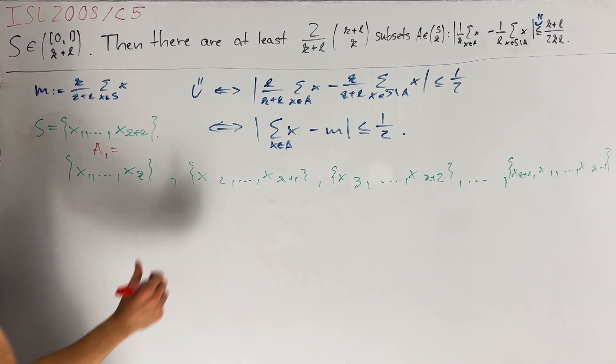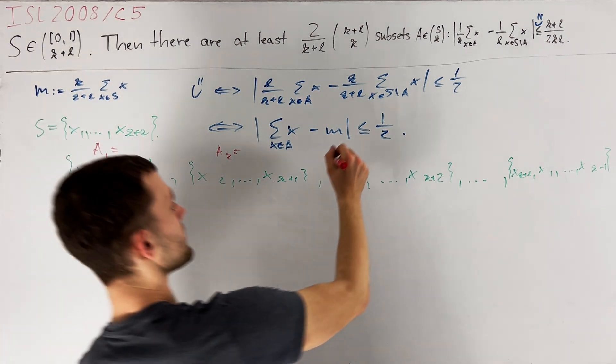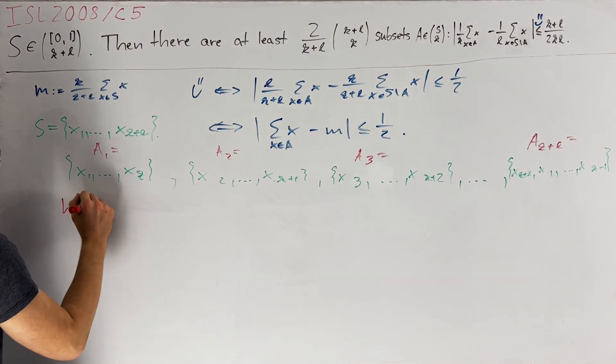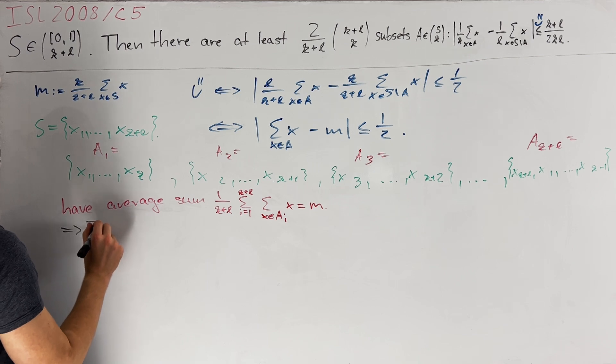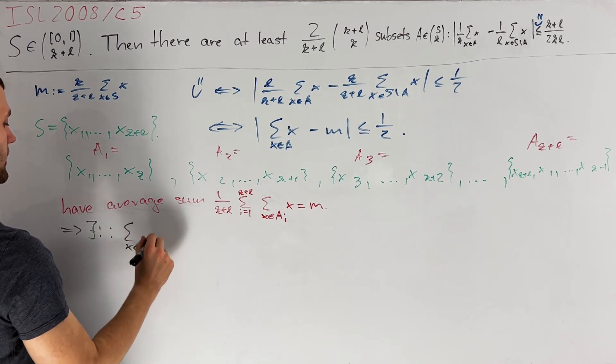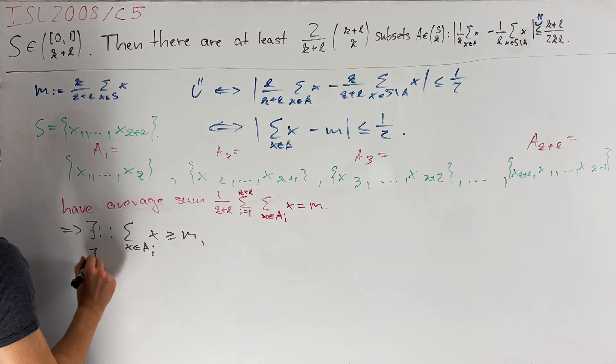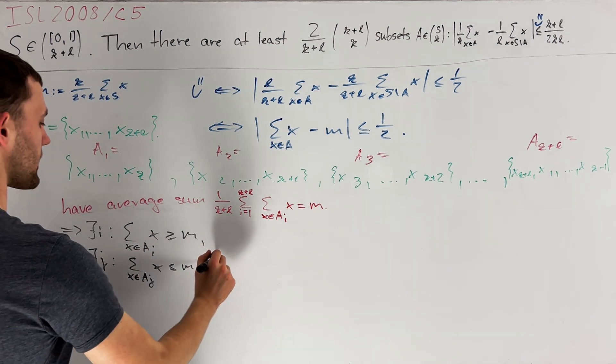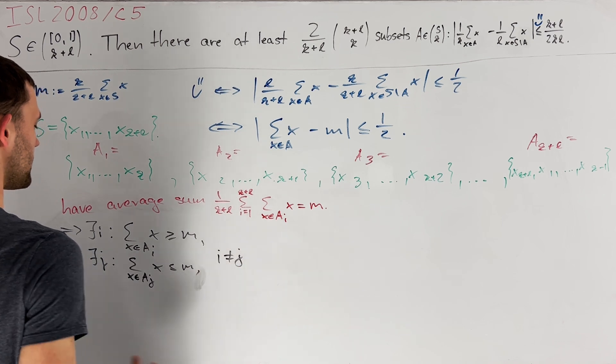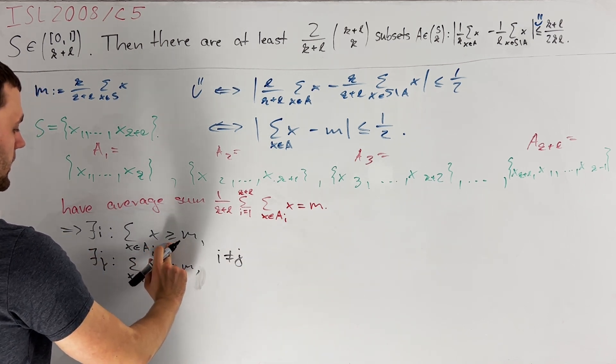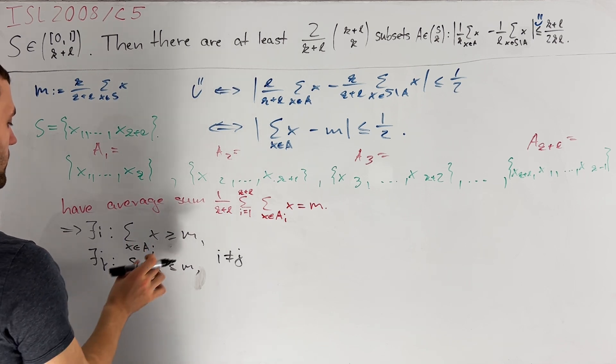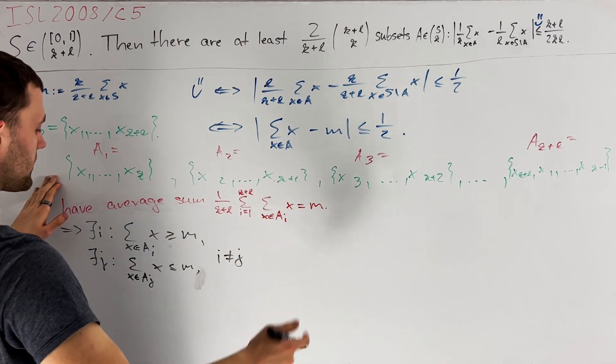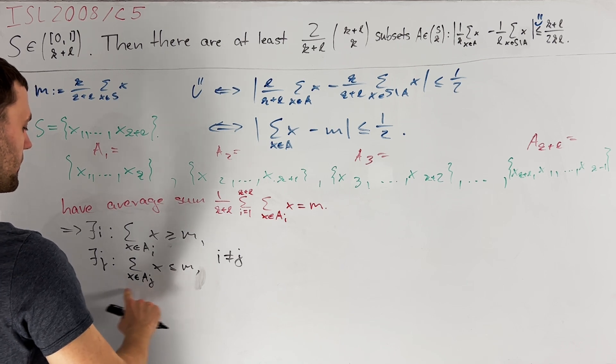Then these sets, which I call A1, A2 and so on, up to AK plus L, have average sum exactly equal to M by symmetry. Therefore we can find an I such that the sum of elements of AI is greater than or equal to M and similarly there exists a J such that this holds with a less than or equal sign. I claim that we can also choose I not equal to J. Indeed, otherwise we would have equality here, but then note that K plus L is at least 2, so we can remove AI from our consideration and the remaining sets will still have average sum equal to M so that we can in any case find a distinct J with this property.